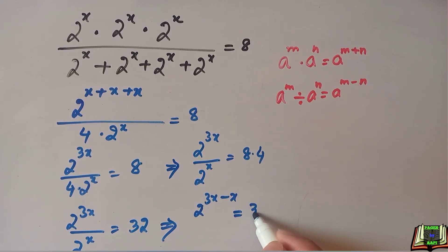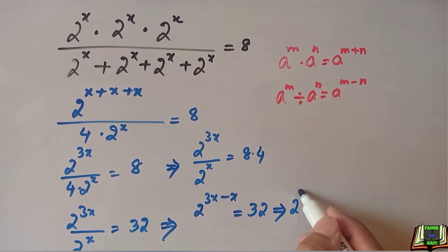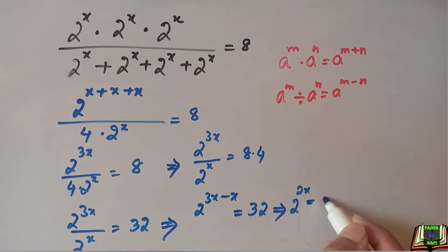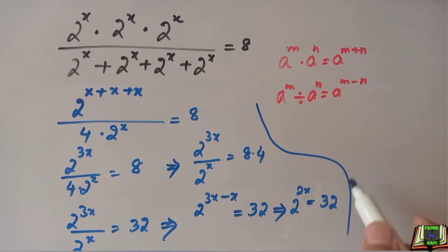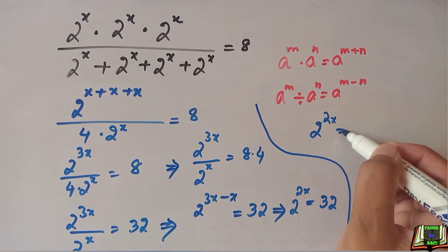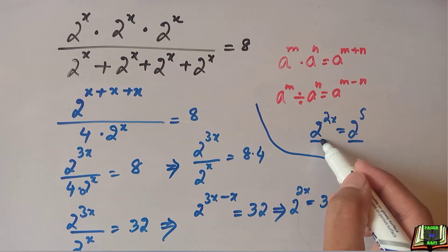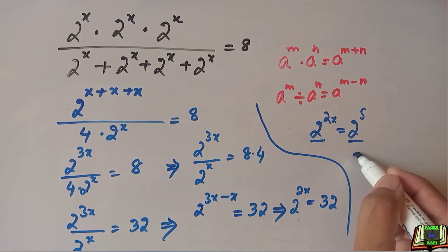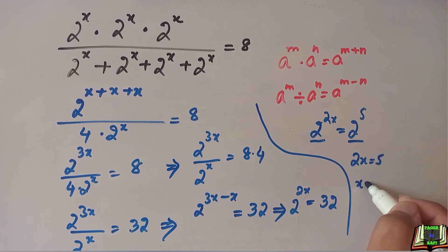So 3x minus x will be equal to: 2 to the power 2x is equal to 32. Now we are going to write this 2 to the power 2x as it is, and 32 can be written as 2 to the power 5. Because bases are same and equal, they will be cancelled out. We have exponents only: 2x is equal to 5.